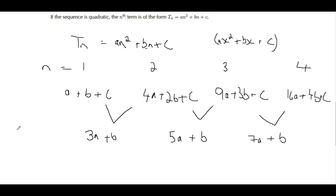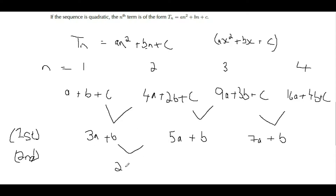That over here is our first order difference. Now looking at the second order difference — what makes this quadratic is the fact that the second order difference is common. To get from 3a to 5a, we add 2a. From 5a to 7a, it's again 2a. All of these terms are 2a — that's how we know it's quadratic.